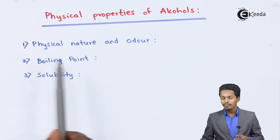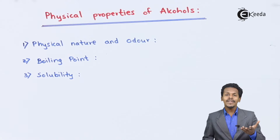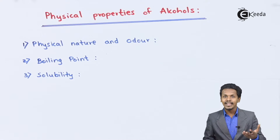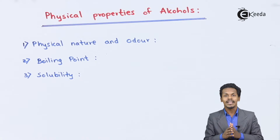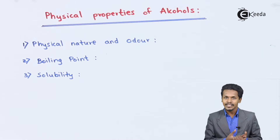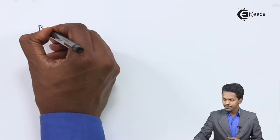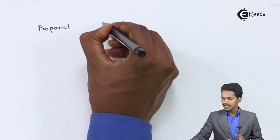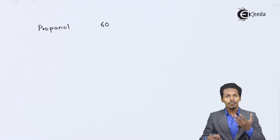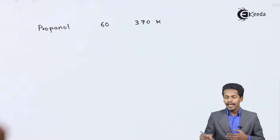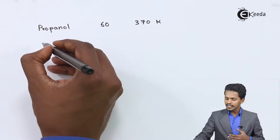Talking about the next point — boiling point — it has been found that alcohols have a higher boiling point compared to alkyl halides, alkanes, or aldehydes. For example, propanol has a molecular mass of 60 and a boiling point of 370 Kelvin.